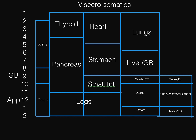Right there you have the whole visceral somatics chart. The hardest part is honestly just memorizing the lines. The way I put it in my head is THL, PSL, small intestines, and legs — you're just walking yourself down the body. This whole chart over here is the GU system, and then you're just left with your arms and your colon. I really hope this is helpful. Bye-bye.